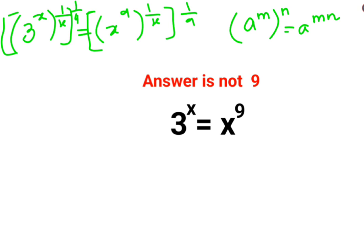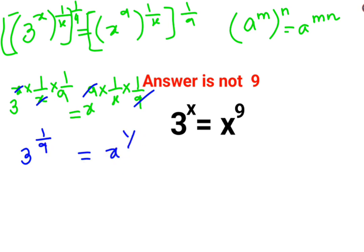So this becomes 3 raised to x multiplied by 1 upon x multiplied by 1 upon 9. Here we have x raised to 9 multiplied by 1 upon x multiplied by 1 upon 9. Now if you see things are cancelling and I have 3 raised to 1 upon 9 equals x raised to 1 upon x.